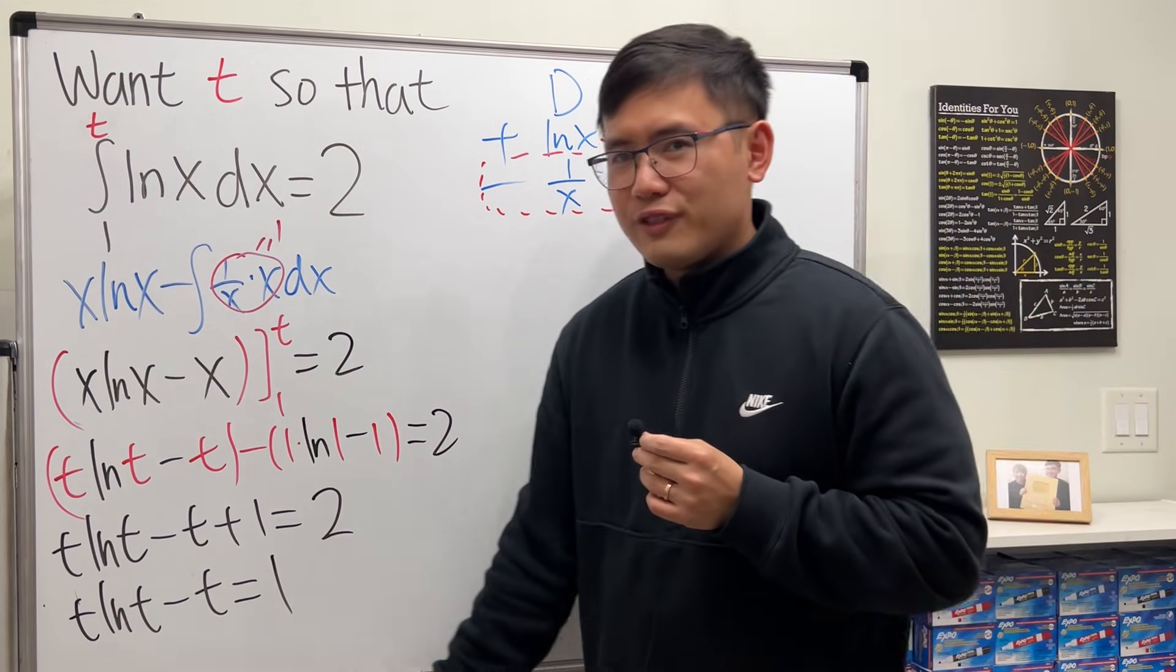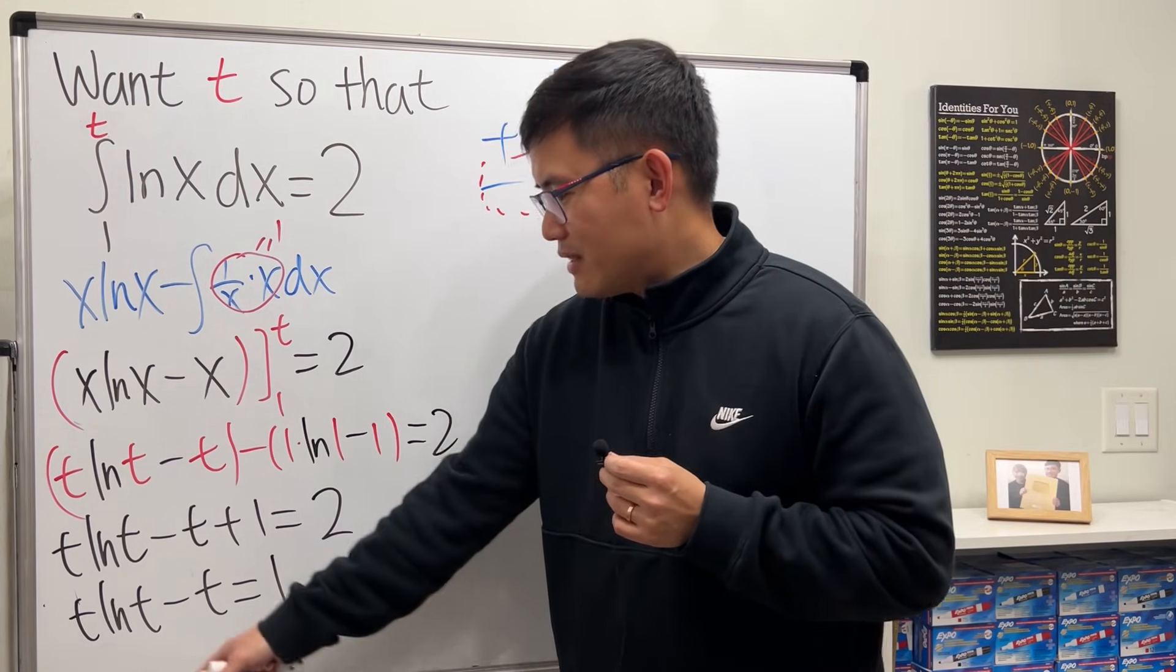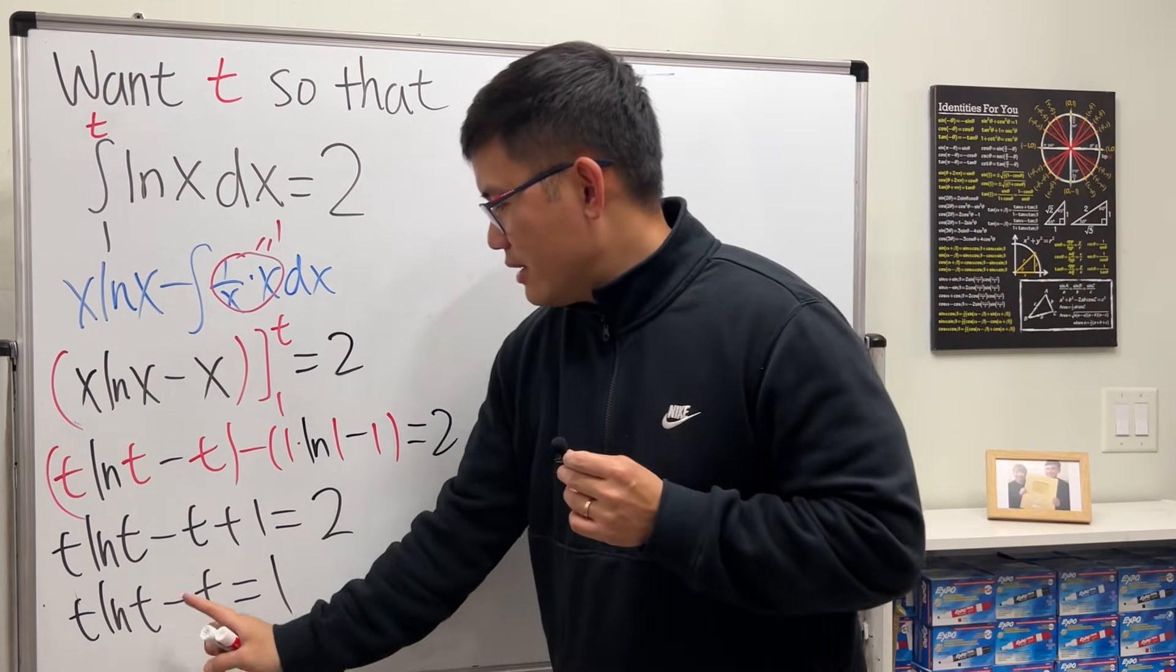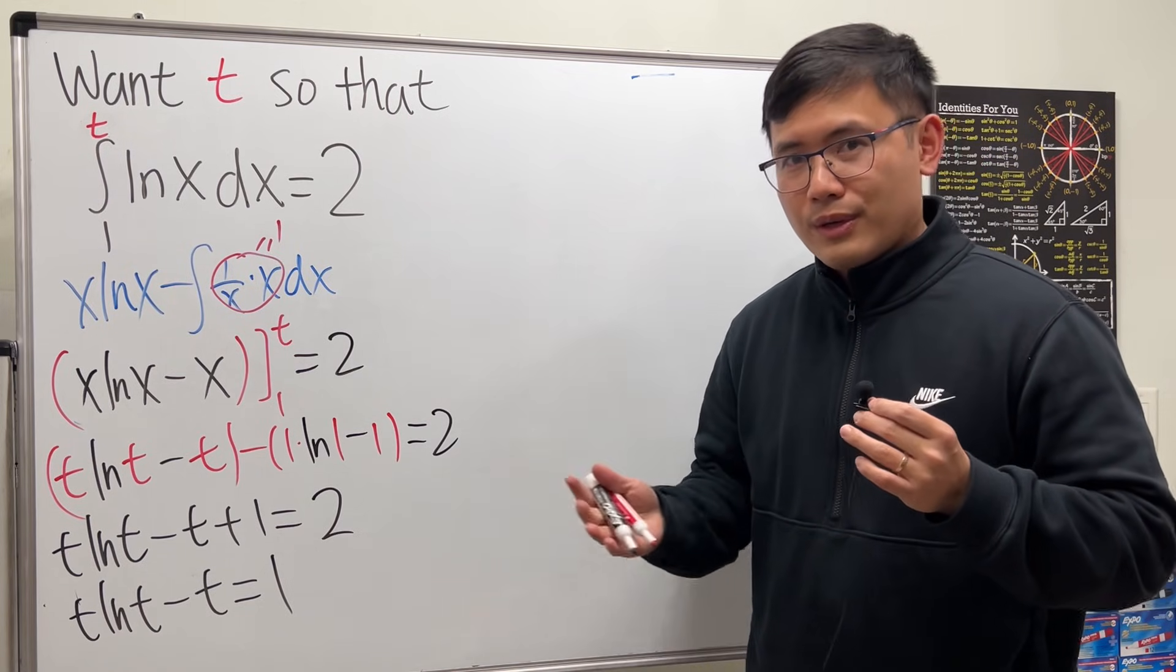But how in the world do we solve that though? We see that we have t inside of the natural log and also the t on the outside and then there's another one here. So how do we do it?